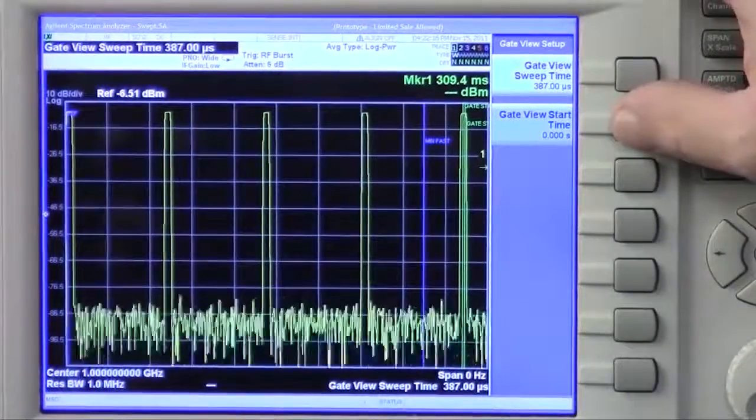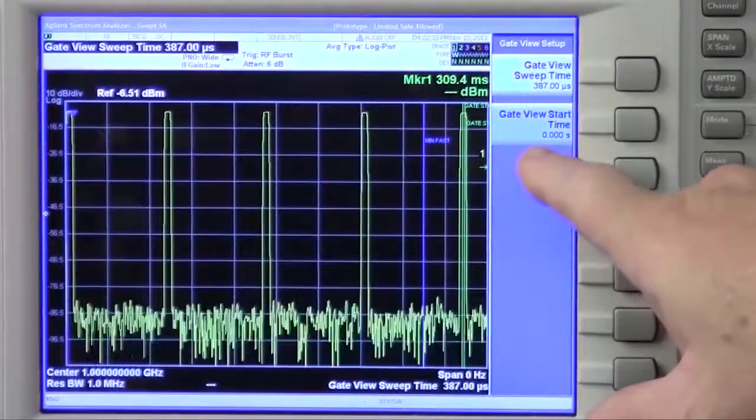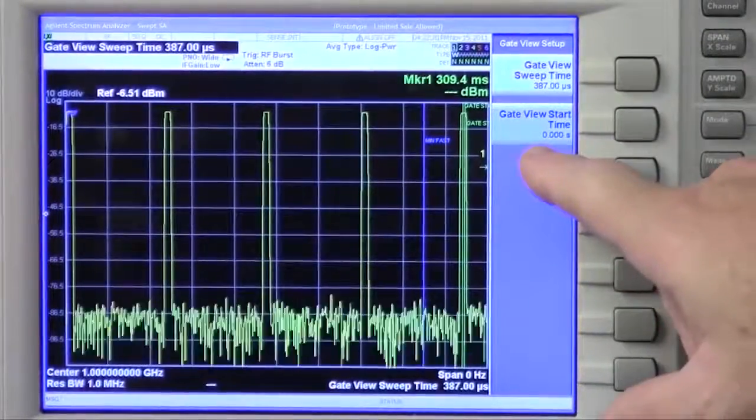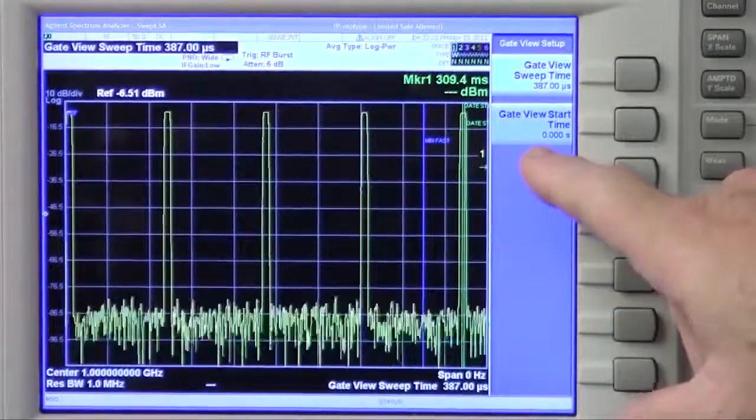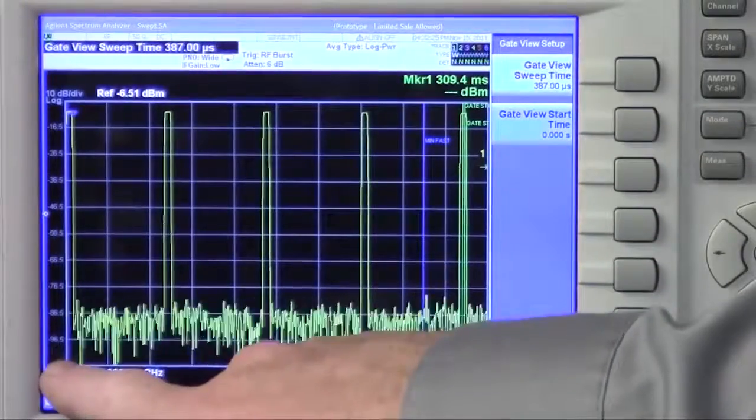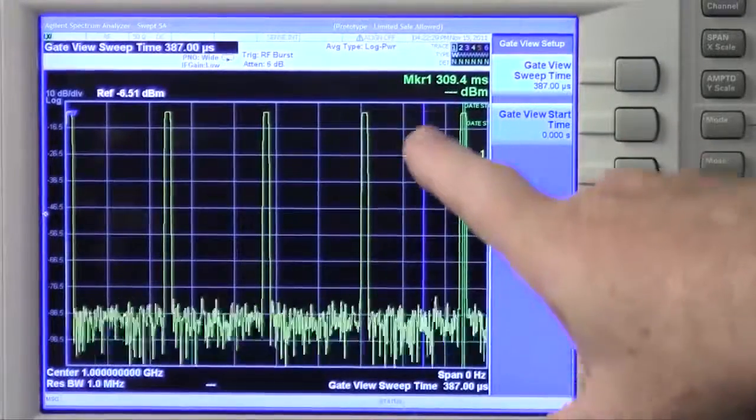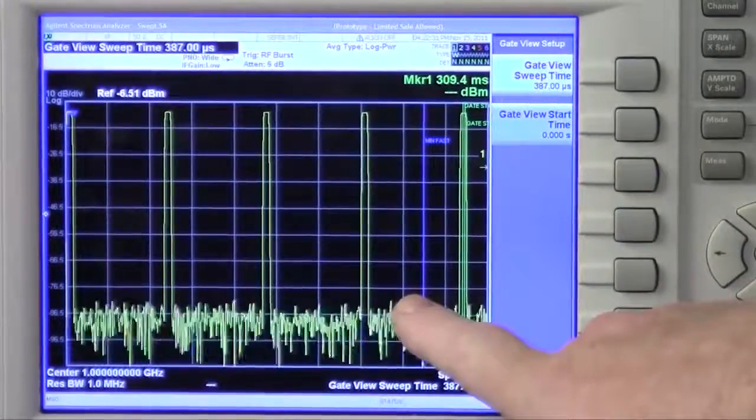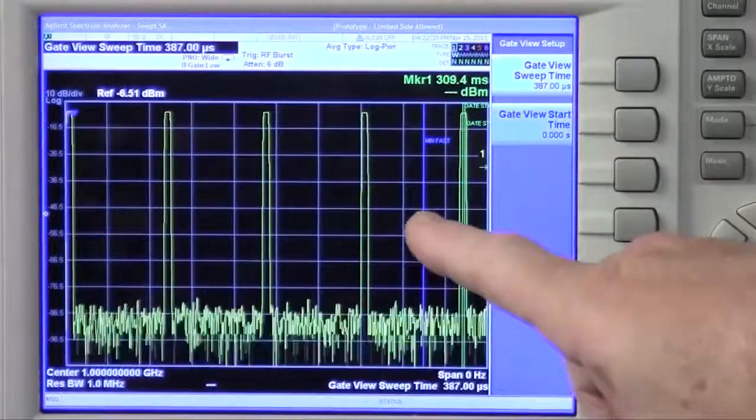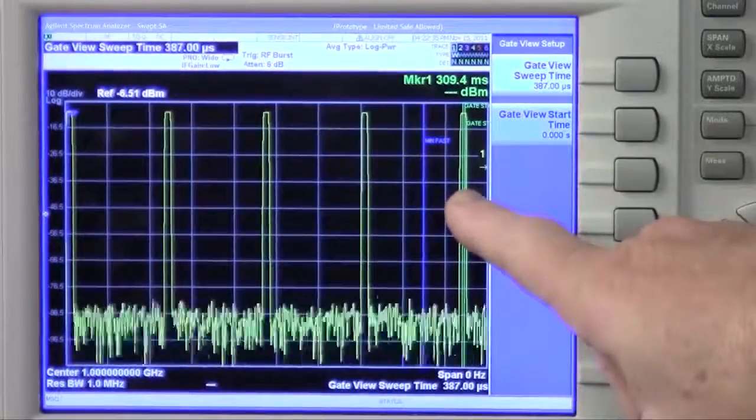To solve this problem, a new parameter called gate view start time has been added. The gate view start time is the time at the left side of the screen. So what we can do now is set the gate view start time to near what the min fast time is, and then we'll have plenty of range to set our gate view sweep time.